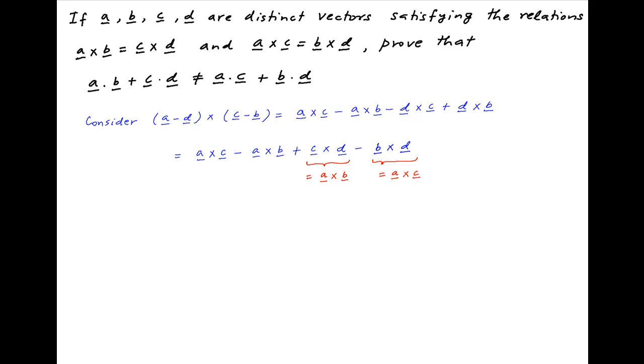Substituting these results, we get a cross c minus a cross b plus a cross b minus a cross c. All the terms cancel out and we are left with a null vector.